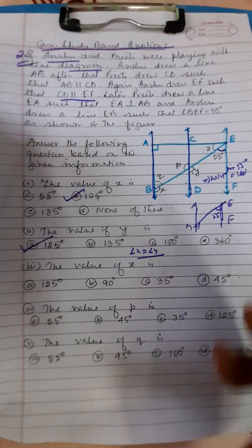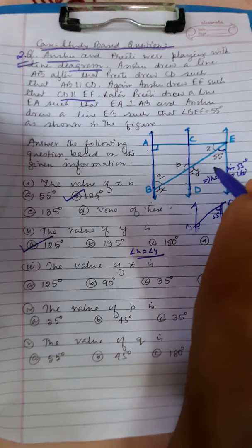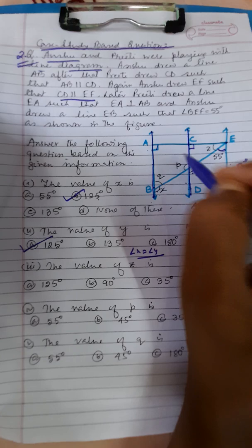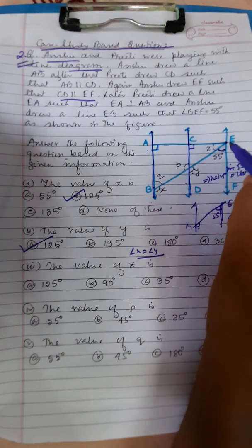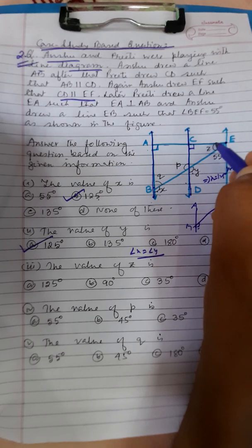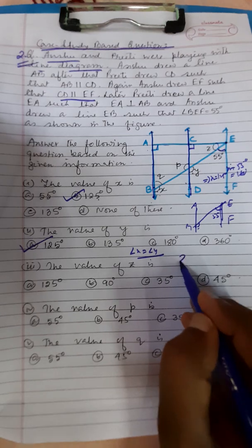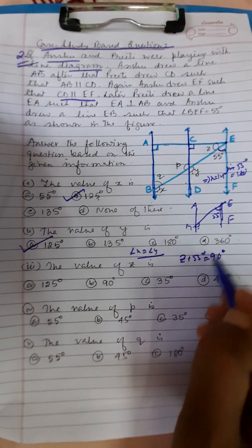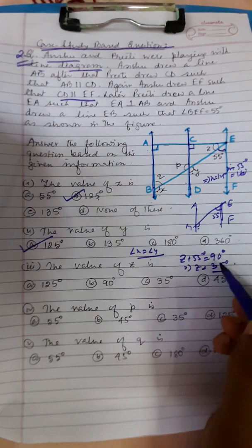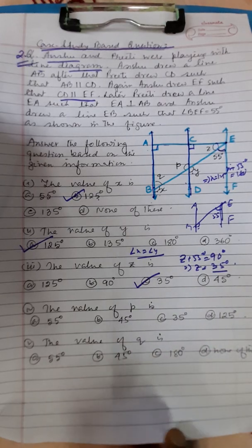The value of Z: EA is perpendicular to AB. Since the lines are parallel, CD and EF are also perpendicular to EA. So angle Z plus 55 equals 90 degrees, giving Z equals 35 degrees. 90 minus 55 is 35.